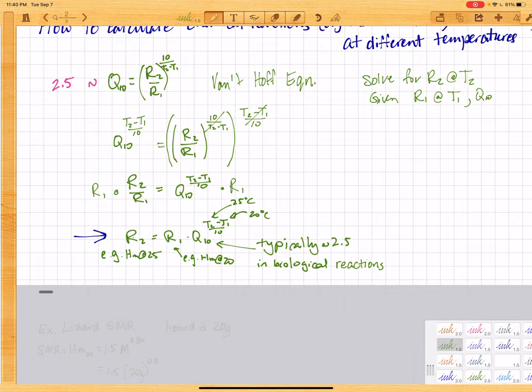And again, Q10 is typically about 2.5. So for example, if we know the metabolic rate at 20, and we want to know the metabolic rate at 25 Celsius, then we just plug in R1 and then 25 for T2 and 20 for T1 and solve with Q10 at 2.5.